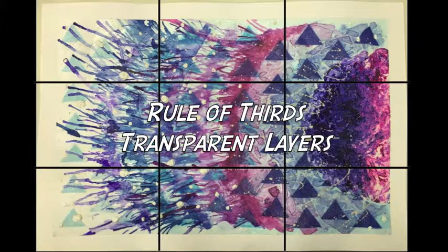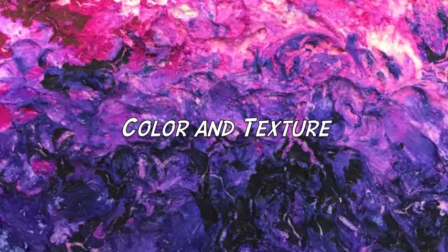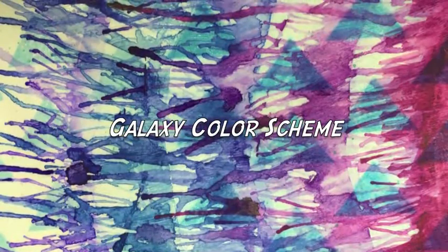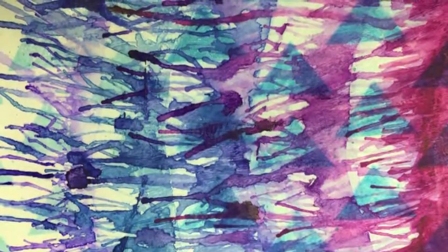Rule of third and transparent layers are utilized to achieve artistic composition. Color and texture are major elements of art used. Just as texture is unique, the colors are of the galaxy's color scheme, representing where the exploded objects will go.